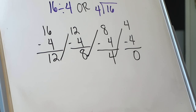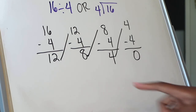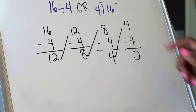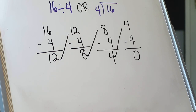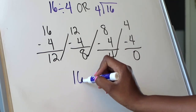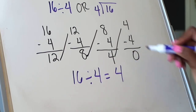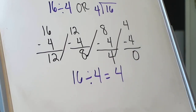So now I'm at 0, meaning there's nothing left for me to subtract. I need to ask myself how many times did I subtract in that process. I subtracted 1, 2, 3, 4 times. So the quotient of 16 divided by 4 is going to be 4 because I subtracted 4 times.